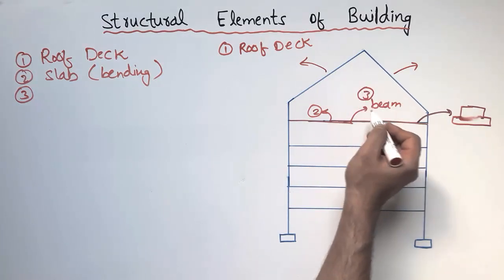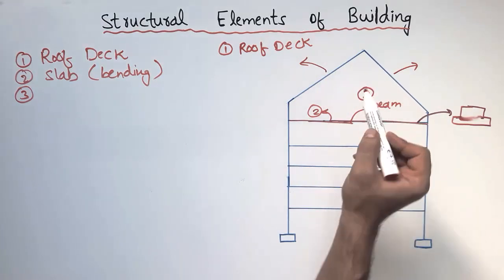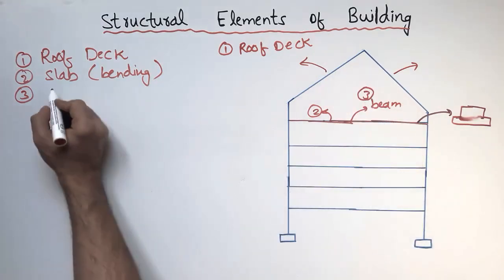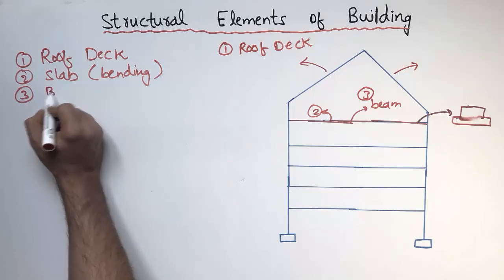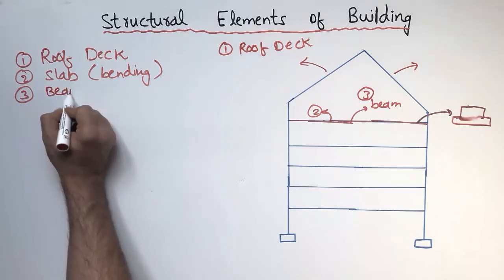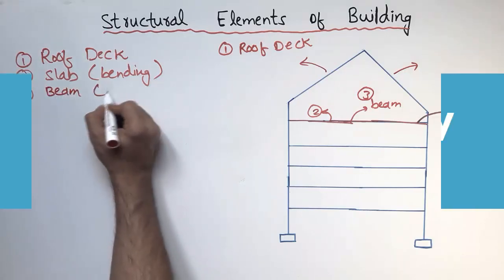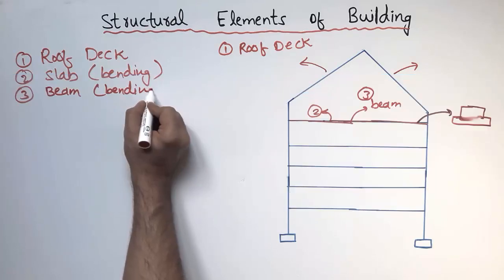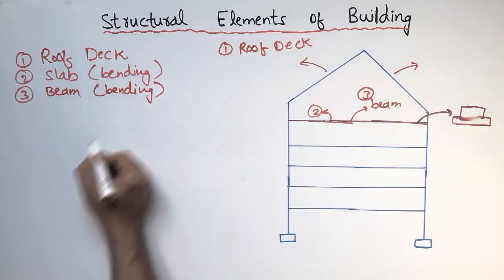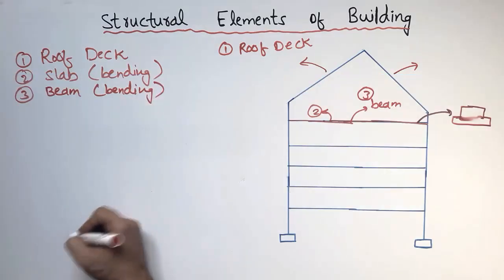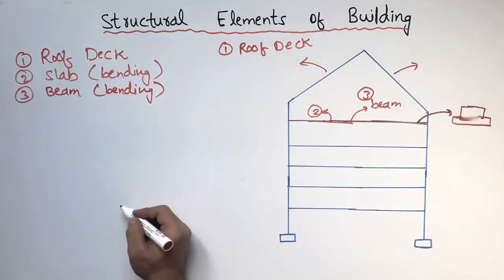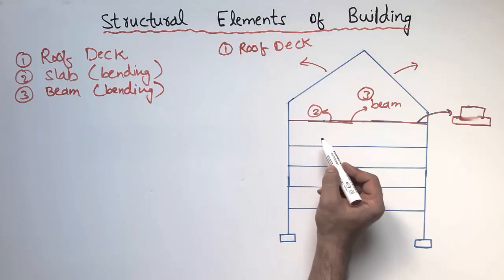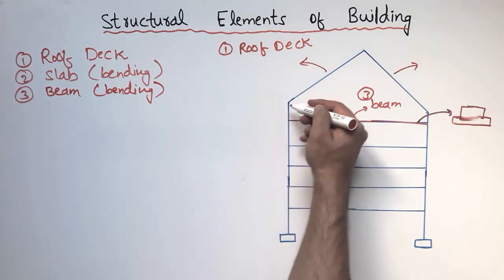The slab takes the load and transfers it to the beam. The third structural element of a building is the beam, which is placed below the slab. The beam is also primarily designed for bending.